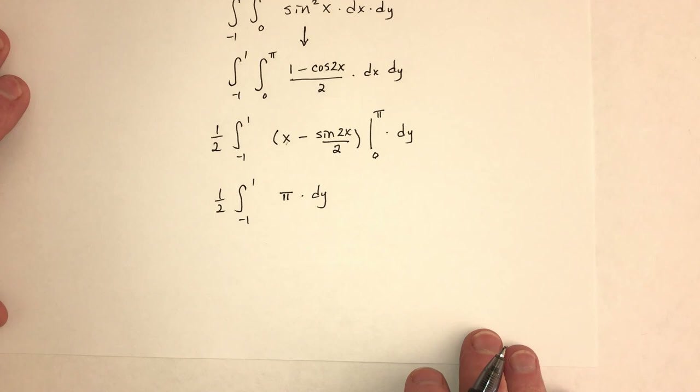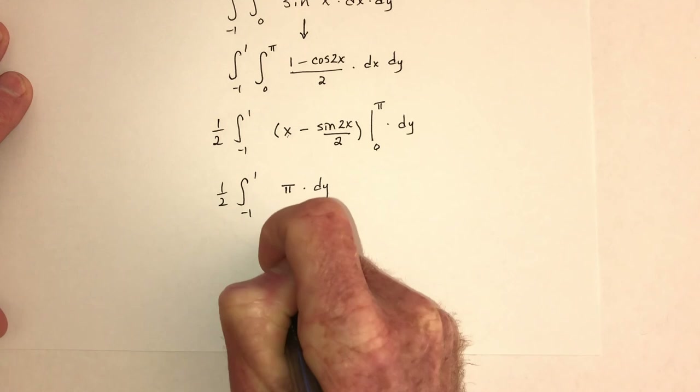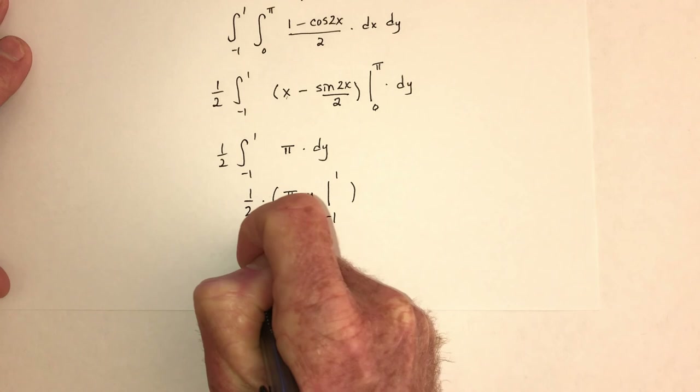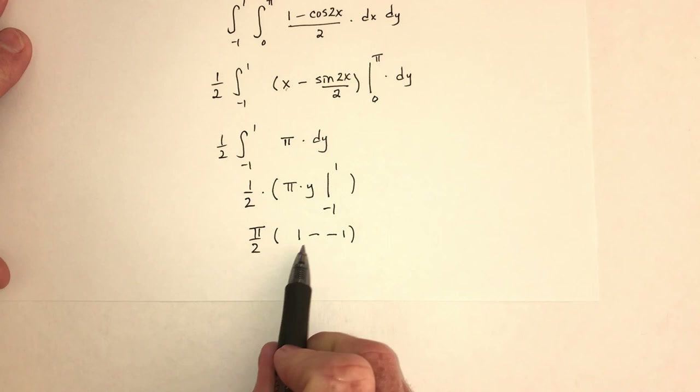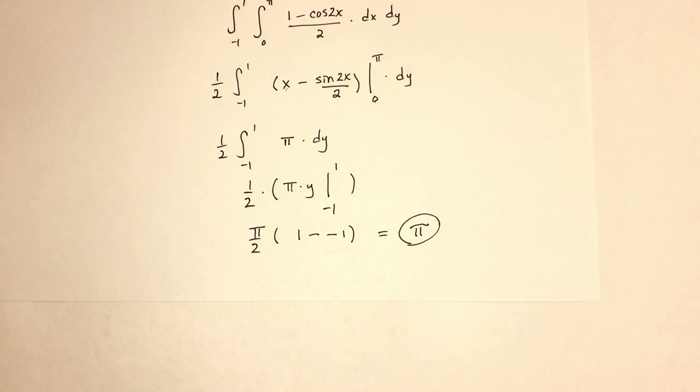Then integrate with respect to y. Integrating pi with respect to y means it's just pi times y, evaluated from negative one to one, and don't forget the one half factored out. I could factor out the pi as well. Substituting one minus substituting negative one gives the number two, which cancels the one half. So the final answer is pi.